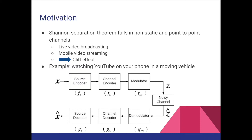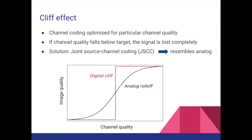Another example is mobile video streaming. You must have experienced when watching YouTube on your phone in a moving vehicle that it tends to buffer a lot. That's because the source and channel encoders have to constantly accommodate for the changing channel conditions while on the move. This leads to what we call the cliff effect, which occurs when the channel condition falls below the target for which the channel and source encoders were optimized. When that happens, the image quality will fall suddenly because the signal is completely undecodable.